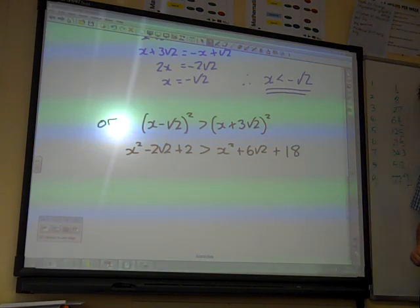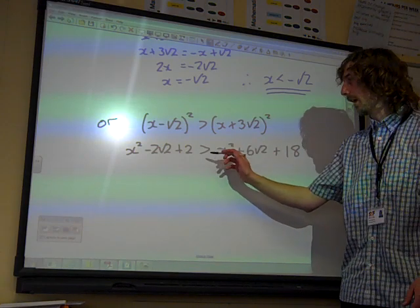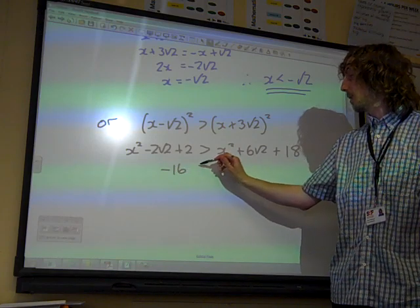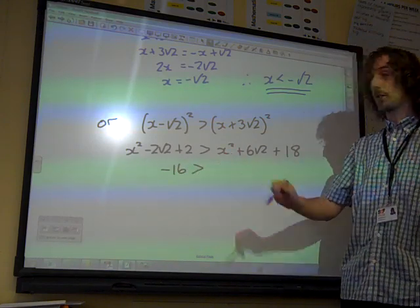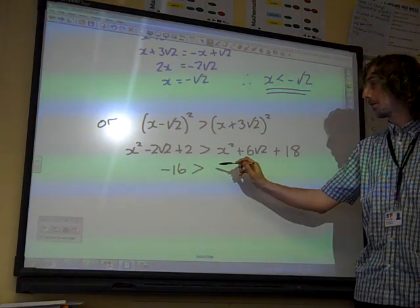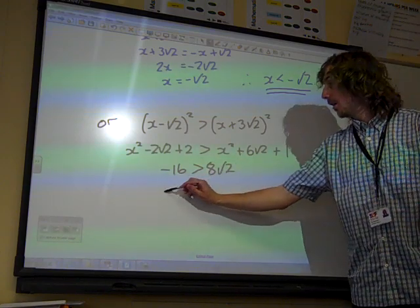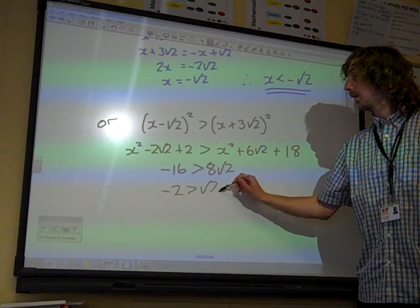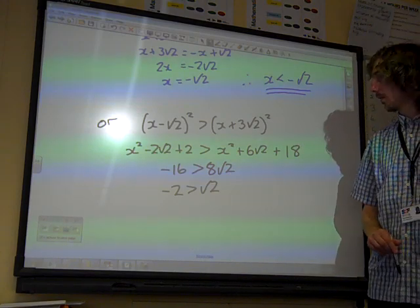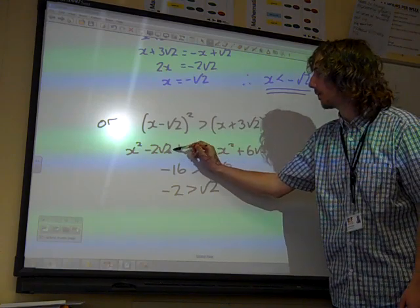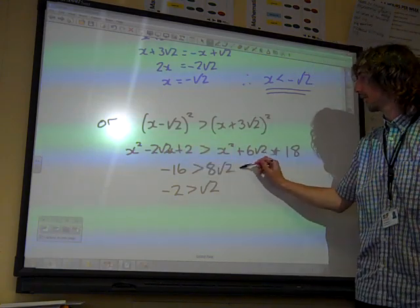Rearrange things now. We've got 6 root 2 over there. So, let's, what should we do? Minus 16. The X squared is going to cancel out. We've got, I think, 8 root 2 over here. 2 by 8. I seem to have lost an X in all of this. Two X's.